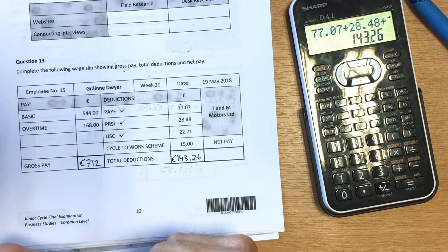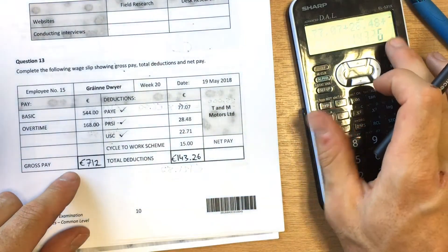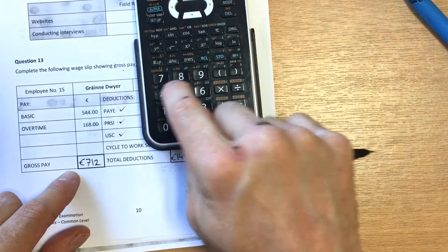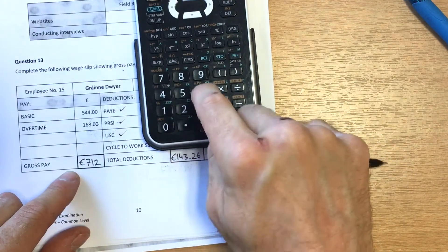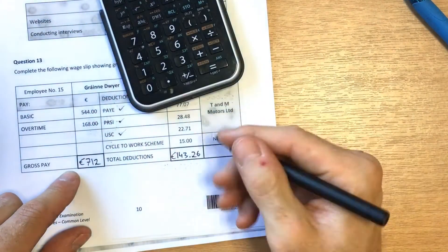Now back to our wage slip. How do we get our net pay? Our net pay is our gross pay minus deductions. So it's 712 minus 143.26 equals 568.74.